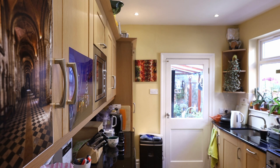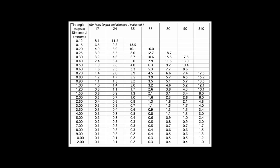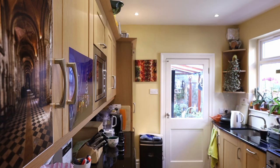This is where I get my trusty tilt tables out and look for 24mm. I know the distance between this plane and the camera is around about 30 centimetres. I look on the table at 30 centimetres and it's 4.6 degrees — so around about five degrees of tilt. Tilting that direction will have the plane run there; tilting the other direction would have the plane run along here.